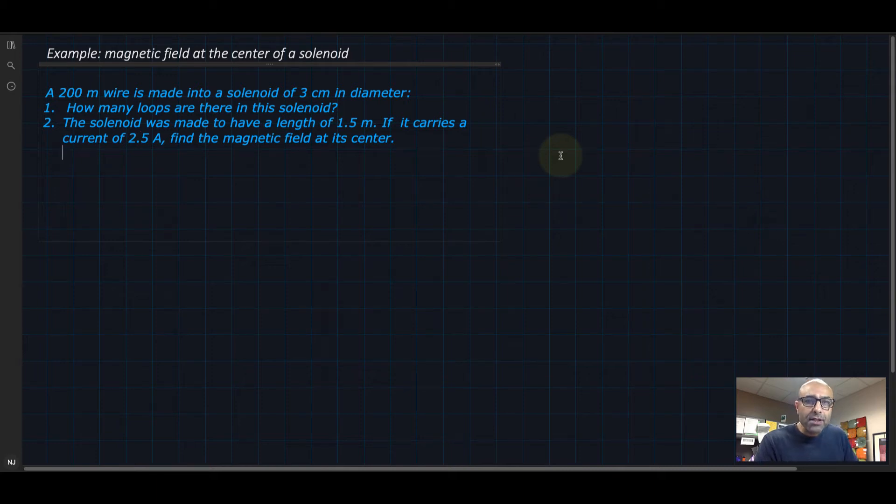Hey there everyone, let's check out this example together about finding the magnetic field at the center of a solenoid. We have a 200 meter wire made into a solenoid of 3 centimeters in diameter.